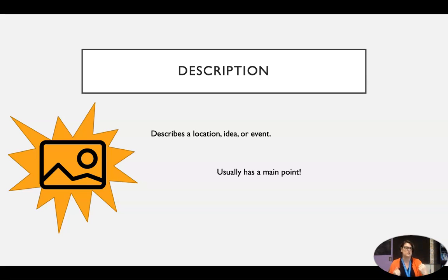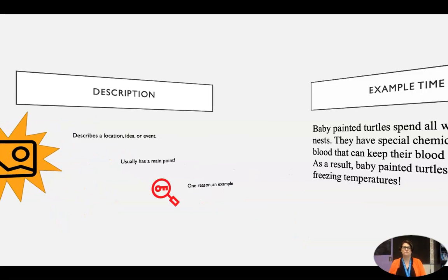Description can also just be, hey, let me just show you this pretty location, or let me help you understand this idea. Some keywords could be one reason or an example. Quick note on keywords: just because a keyword is there does not mean it has to be that type. See how the keyword is being used. Is it actually showing an example or is it like an example of a solution? Also, you might not have the keywords we've talked about, but you want to look for something similar.